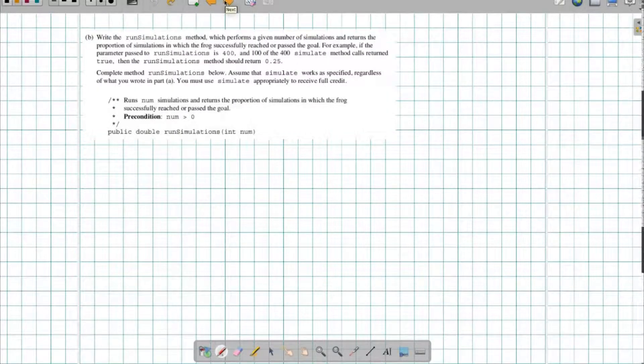On part B, it says write the run simulations method, which performs a given number of simulations and returns the proportion of simulations for which the frog successfully reached or passed the goal. For example, if the parameter passed to run simulations is 400, and 100 of these 400 simulate method calls return true, then run simulations method should return 0.25. So in other words, we should be getting a double out of this. Complete run simulations below, assume that simulate works as specified regardless of what you wrote in part A. Remember that simulate is going to return true or false, depending on whether or not we made it.